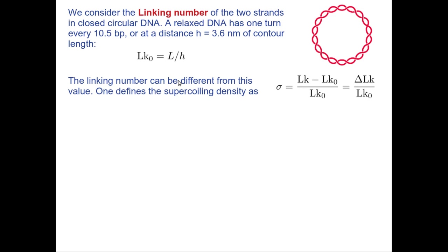The linking number can be different from this relaxed value, and typically in biological molecules it will be different. To define the deviation from this natural, relaxed DNA linking number, we introduce a quantity sigma. Sigma is the difference between the actual linking number of a closed circular DNA and this reference (relaxed molecule) linking number, divided by LK_0. So sigma is a measure of how much the linking number deviates from the relaxed one. I define here delta LK as the excess linking number, which can be either positive or negative.